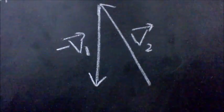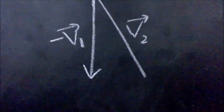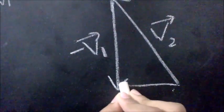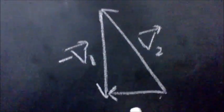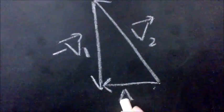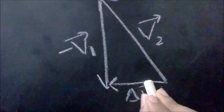Now, we place the two arrows head to tail. We now draw the resultant vector which is the change in velocity.